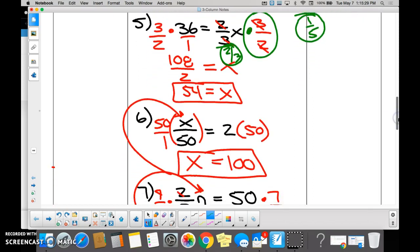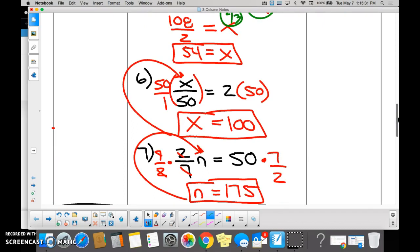Number 6. What's my goal here on number 6? What do I want to do? Get the variable alone. So what is being done to the variable? It's being divided, so how do you undo division? Multiply. So what should I multiply by? 50 over 1 to get rid of this 50, right? And if you multiply the left side, you need to multiply the right side. You guys get the idea?